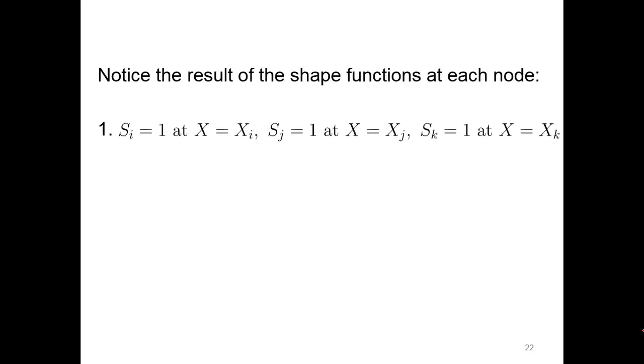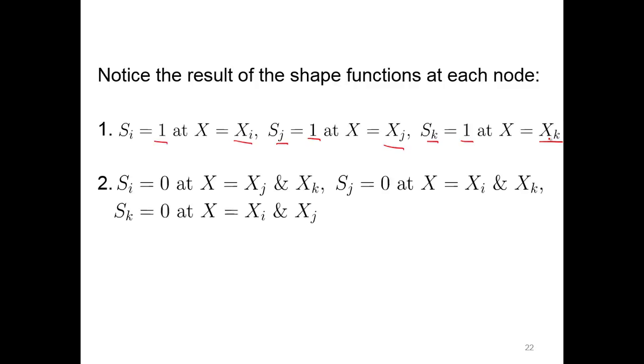Let's look at the shape functions at each node. Shape function at node I is one at that location. Shape function for node J is one at node J. Shape function for node K is one at node K. Likewise, everywhere else, it's zero. Shape function node I is zero at J and K. Shape function for node K is zero at nodes I and J. If we add up all the shape functions, they're all equal to one. Remember the linear elements also had the differential with respect to X. That was just linear elements, not for quadratic here.